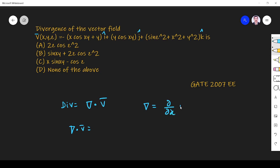Del is nothing but ∂/∂x i vector plus j ∂/∂y vector plus k ∂/∂z. You have to take dot product of these things with V.